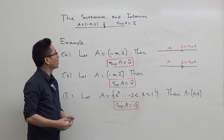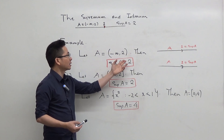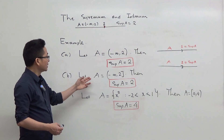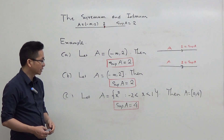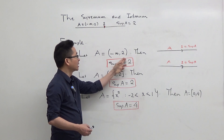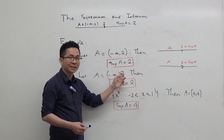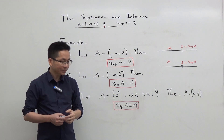Now I'm going to give some examples of the supremum of a set. In the first example, A is the open interval minus infinity to 2. From the definition, we can see that 2 is the least upper bound or the supremum of A. In the second example, A is the closed interval minus infinity to 2. Note that here 2 is included, and we can show that the supremum of A is also 2. The difference is that in the first example the supremum does not belong to the set A, but in the second example the supremum of A belongs to the set A. In the case where the supremum belongs to the set, the supremum of A is in fact the largest element of A.